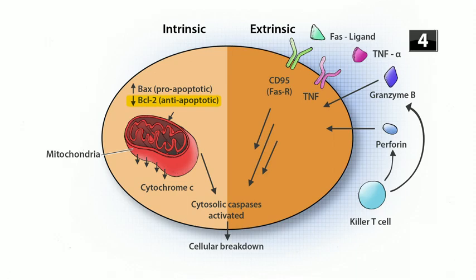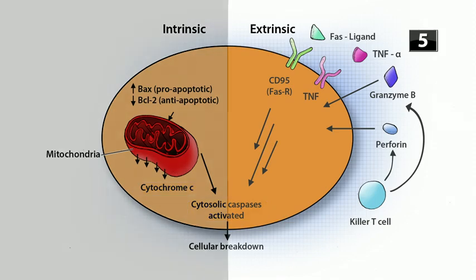BCL2 is a family of proteins that closely regulate the permeability of the mitochondrial membrane — it acts mostly as an anti-apoptotic protein. If DNA damage or another apoptotic signal is received, the BAX proteins will go into the mitochondrial membrane and create channels that allow mitochondrial contents to flow out. BCL2 is anti-apoptotic (both have four letters), and BAX is pro-apoptotic (both have three letters). BAX allows cytochrome c to escape, which then starts a cascade activating caspases, leading to apoptosis.